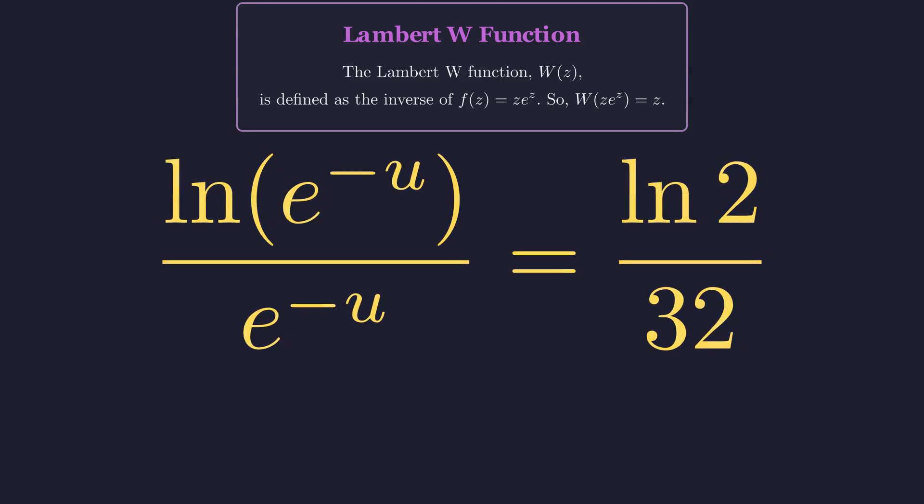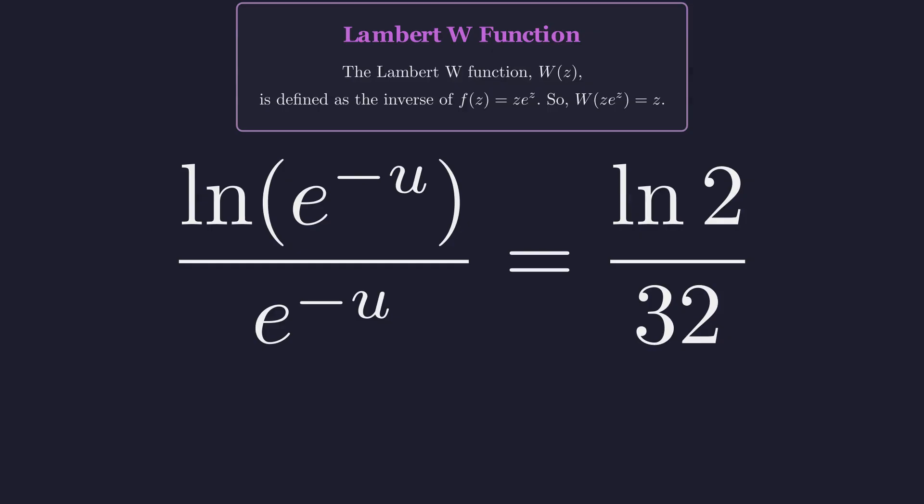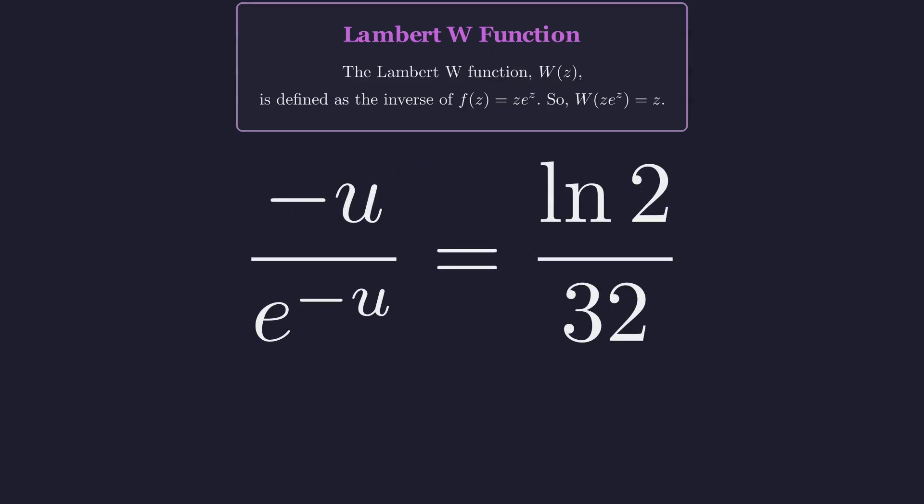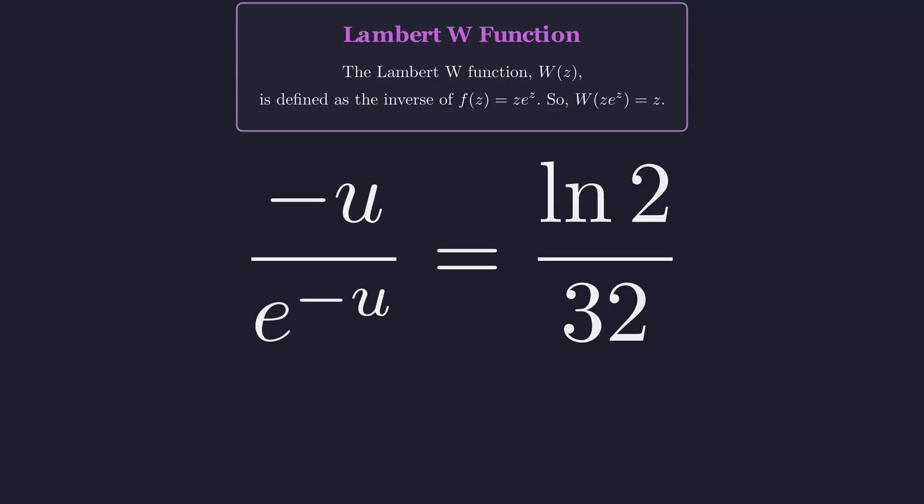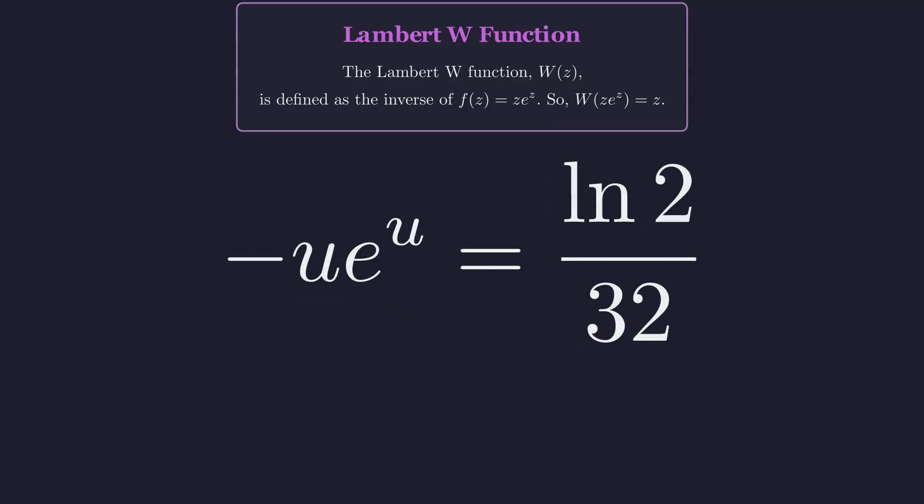The logarithm and the exponential are inverse functions, so they cancel out, leaving just negative u. The numerator simplifies to negative u. Bringing the e to the negative u from the denominator to the numerator changes the sign of its exponent. This gives us negative u times e to the u.